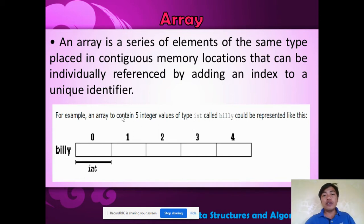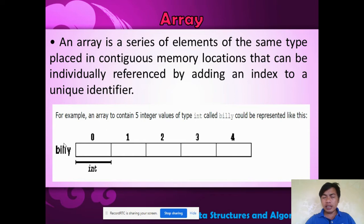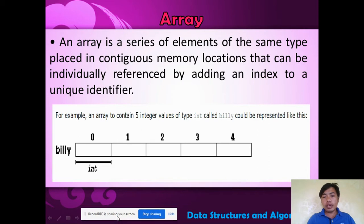These elements can be individually referenced by adding an index — the index refers to the location of that element. For example, here are your memory locations. The name of this array is Bili, and the data type should be the same for all elements. In this example, the type is integer.